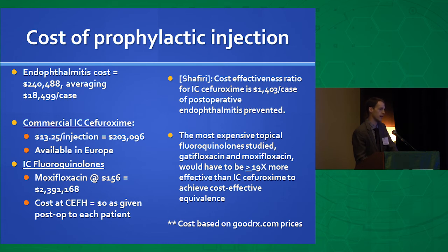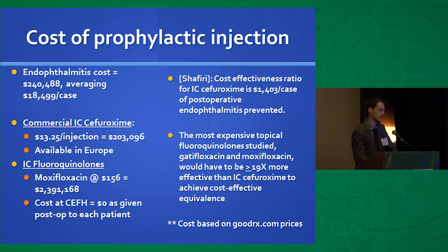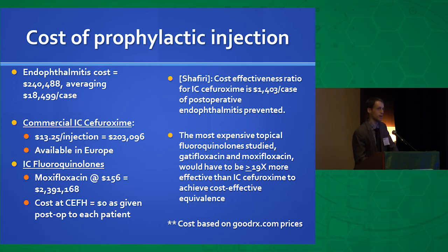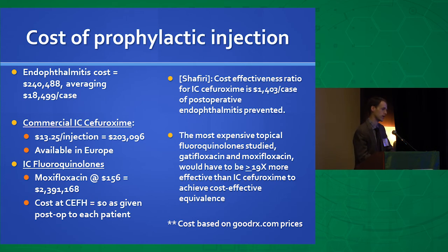For prophylactic injections, commercially available intracameral cefuroxime is $13.25 per injection in Europe. Multiplied by the number of cataract cases over three years, that would be $203,000 — cheaper than the overall cost of managing endophthalmitis. Moxifloxacin from GoodRx costs $156, but since it's used routinely after cataract surgery, pouring it into a sterile vial and using it for all cases in that room would not truly cost any extra money.